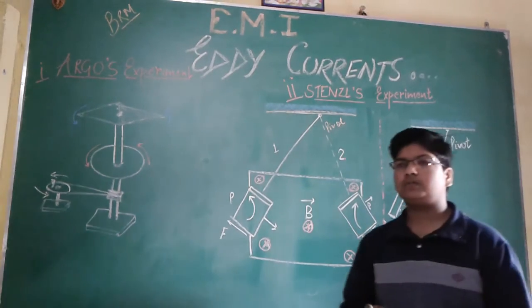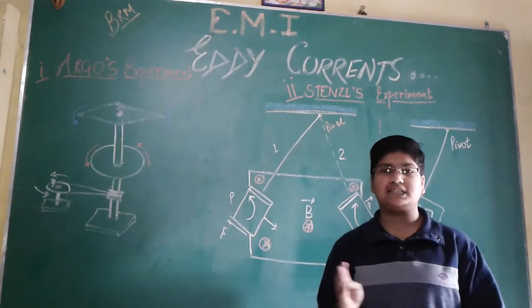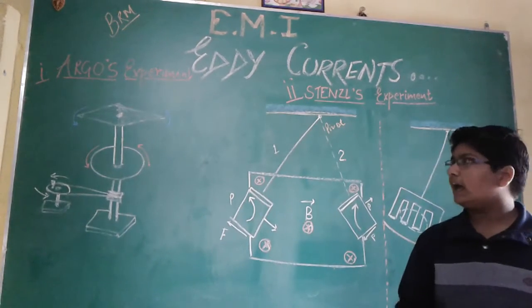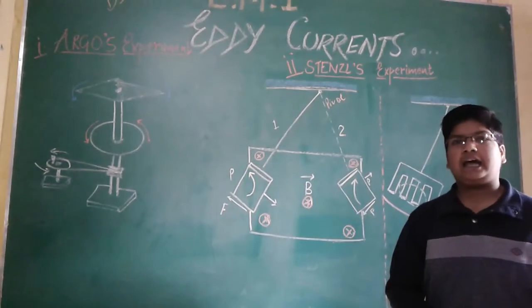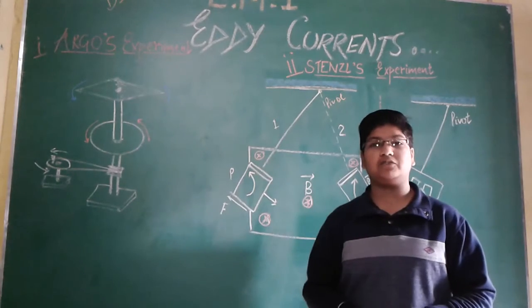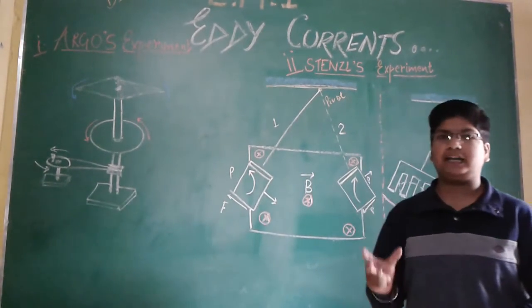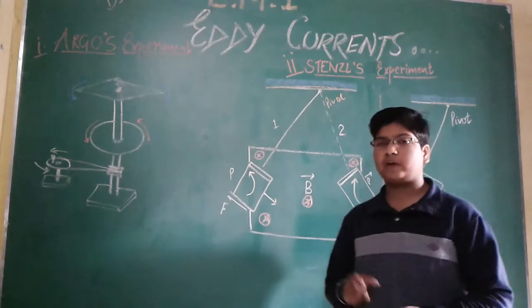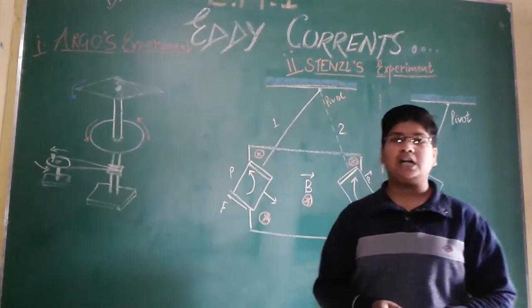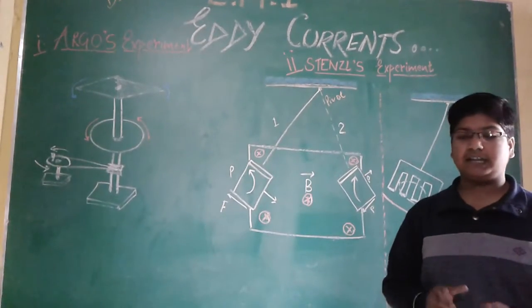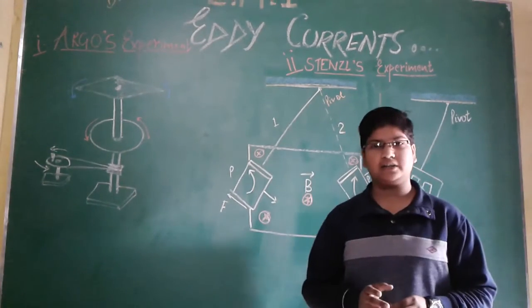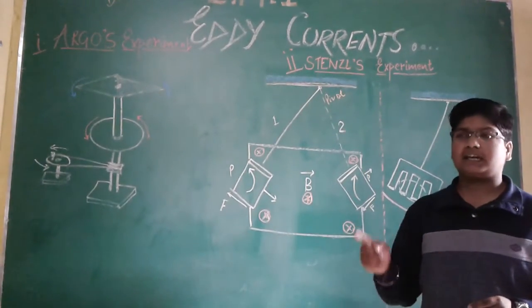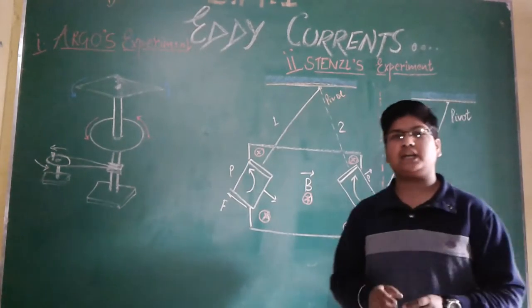As we know, when the flux changes in a closed circuit then a current is induced in it. And if instead of a closed circuit we take any metal plate or metal disc, if it is made to vibrate in a magnetic field or put in a variable magnetic field, then also a current is induced in it. This current that is induced in the metal is known as Eddy current.